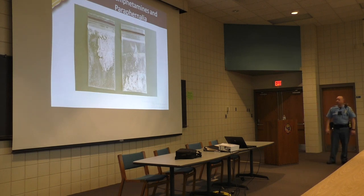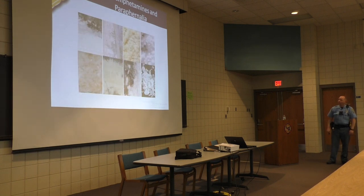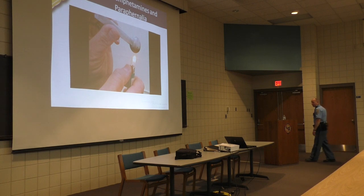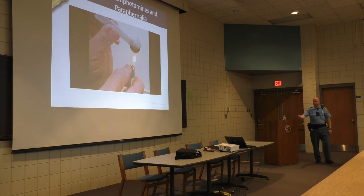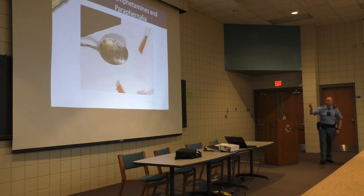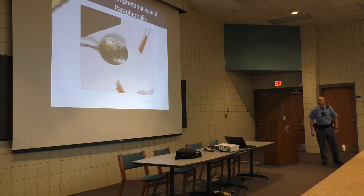Here are different forms of crystal methamphetamine. It's usually ingested through a glass pipe — a pretty thin pipe — where they put the crystal meth in, heat it up with a lighter, and ingest it. Occasionally people use a spoon and syringes. We find these everywhere: houses, cars.